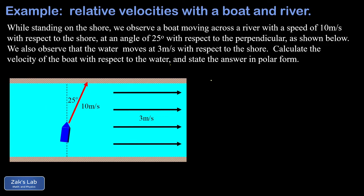We apply our general formula: the velocity of the boat with respect to the shore equals the velocity of the boat with respect to the water plus the velocity of the water with respect to the shore. What we're solving for this time is the velocity of the boat with respect to the water, so we subtract the velocity of the water with respect to the shore from both sides.